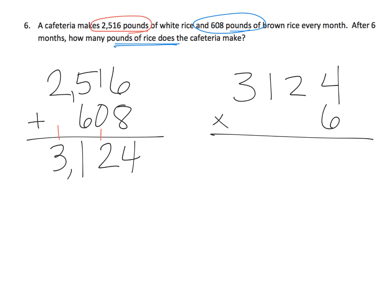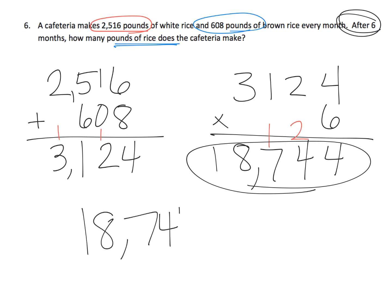Now we need to multiply by 6 because it says after 6 months, how many pounds of rice does the cafeteria make? So now we're going to multiply. 6 times 4 is 24. 6 times 2 tens, that's 12 tens, plus 2 more, that's 14 tens. So that's going to be a 4, carry the 1. 6 times 100, that's 6 hundreds, plus 1 more is 7 hundreds. And then lastly, 6 times 3,000 gives us 18,000. And so there's our answer. 18,744 pounds of rice.